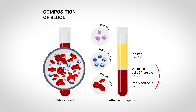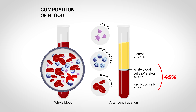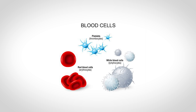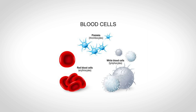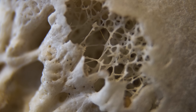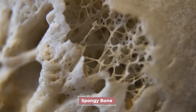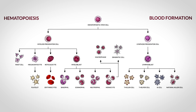Moving on to the next component of blood — the formed elements, or the cellular component — this makes up the remaining 45% of your total blood and is broken down into three cell types: red blood cells, also known as erythrocytes; white blood cells, also known as leukocytes; and platelets, also known as thrombocytes. All three cell types are made by the red bone marrow suspended within the deep part of your bones called spongy bone. This process of producing blood cells is referred to as hematopoiesis.